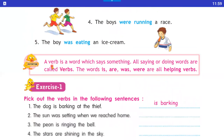A verb is a word which says something. All saying or doing words are called verbs. Hum iski definition is tarah se le sakti hai. Jo words sentence mein hain, humko yeh batate hain kya ho raha hai — woh verbs kar rahe hai.